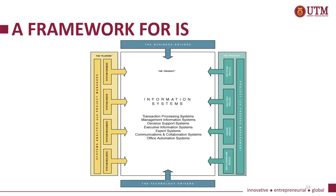This slide shows the framework for information systems. We have four main players: technology drivers, business drivers, the players, and the process. The players consist of system analysts, project managers, system builders, system designers, system users, and system owners. The process consists of project and process management, containing system initiation, system analysis, system design, and system implementation.